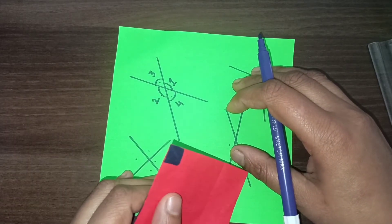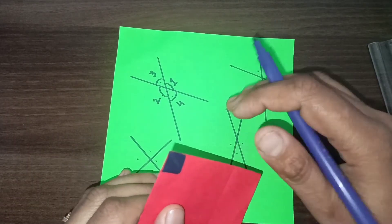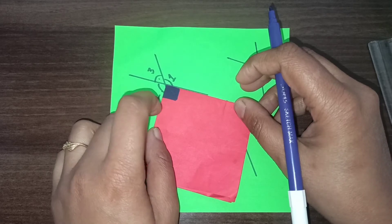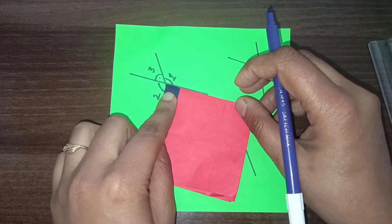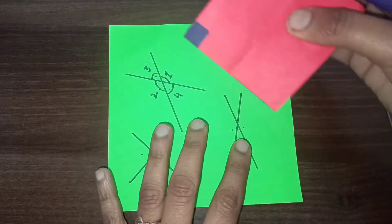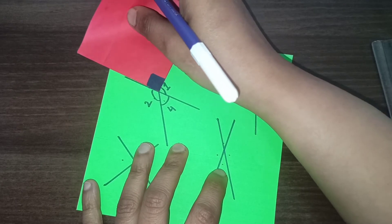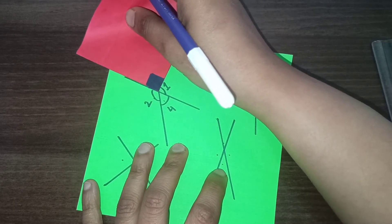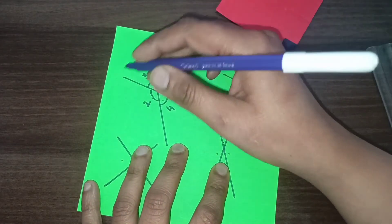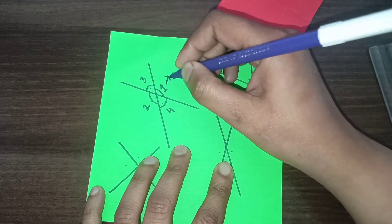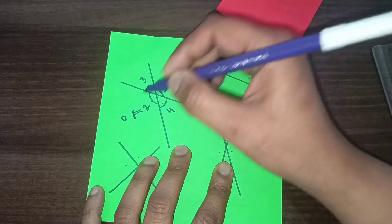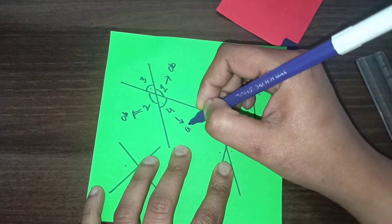Make guesses about angle three and four. You are saying that these are acute angles, so let us check. Yes, these are acute angles — angle three is also an acute angle because it is less than a right angle.